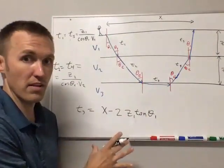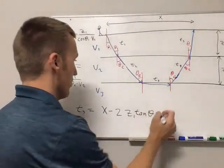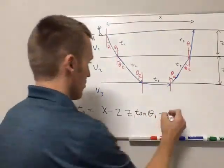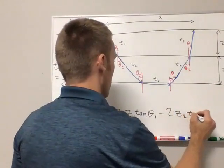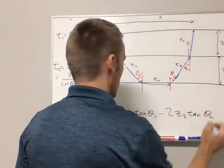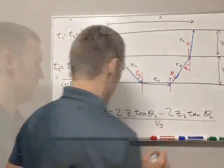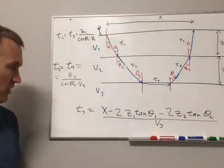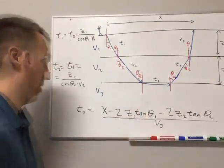Okay, so then, and you should remember that from layer one, from the two layer problem video. And then now we just have this additional layer that we need to subtract. So we have minus two z two tan theta c, and then we need to divide all this by v three. So this is now the time it takes to travel along this critically refracted ray path.